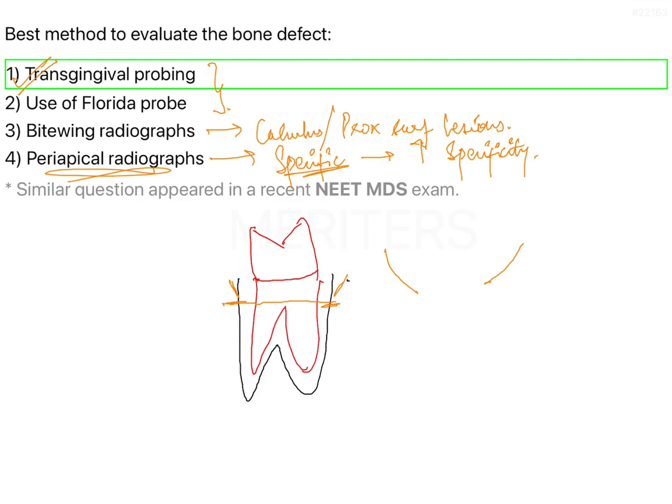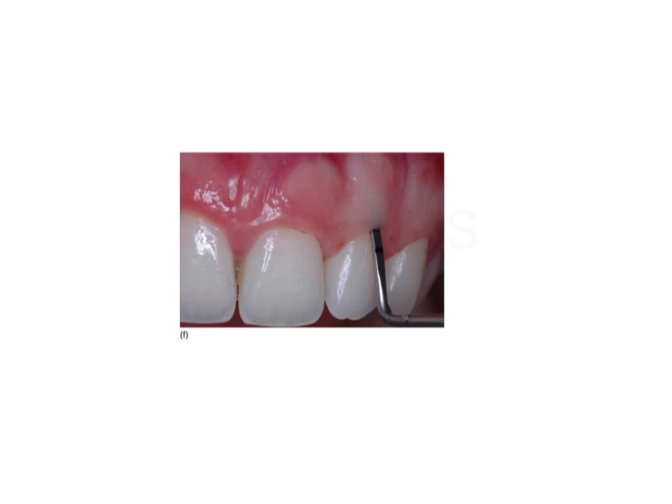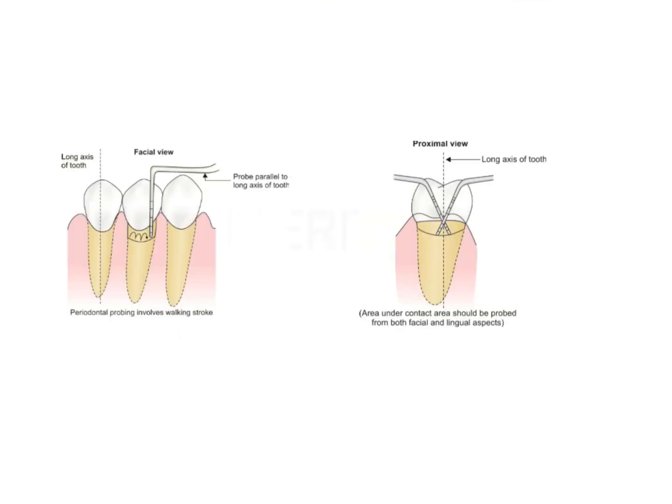This helps to identify any type of bone defect present — whether it is a fenestration, a dehiscence, or a crater. As shown in the image, this is what transgingival probing looks like: the probe is inserted all the way into the gingiva until you meet resistance and hit something hard like bone. In the facial view, you run the probe across the bone.